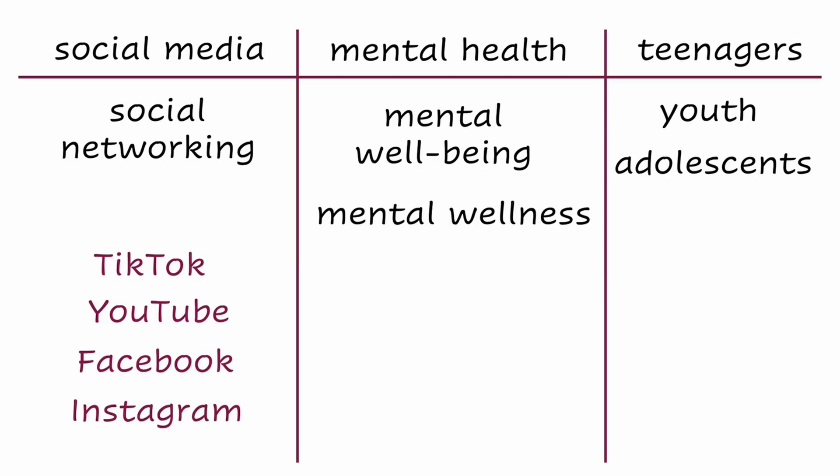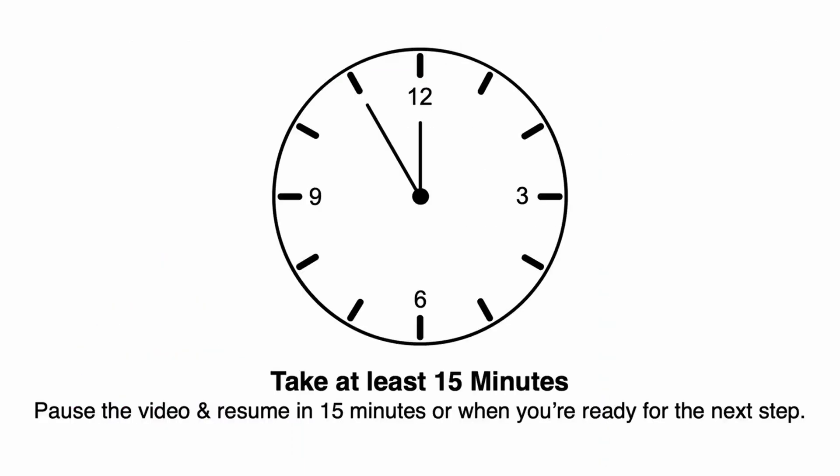Googling your topic to learn more about it might also help. While we don't often use blogs, Wikipedia, or encyclopedias as sources in our research projects, sometimes they can help us find the right words for our research topic. Take 10 minutes to apply this process to the unique concepts from your research question. Remember, start with the keywords from your research question at the top, then list synonyms, broader, or narrower terms for each underneath. Pause the video here and resume when you're ready for the next step.